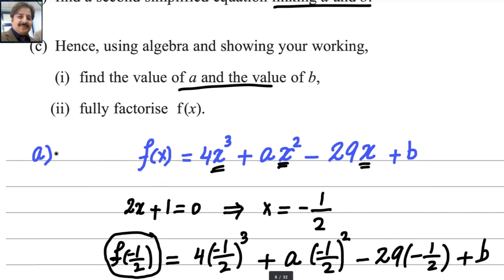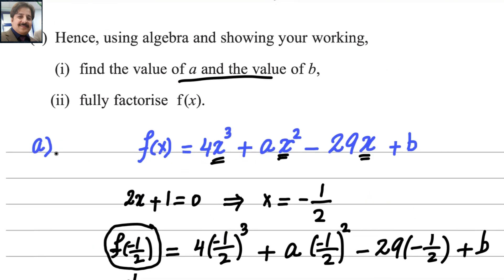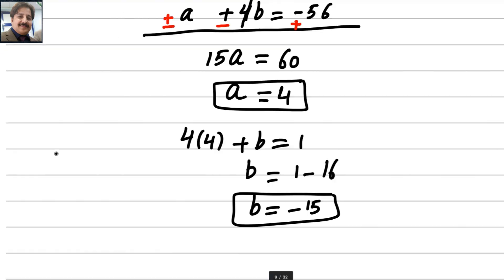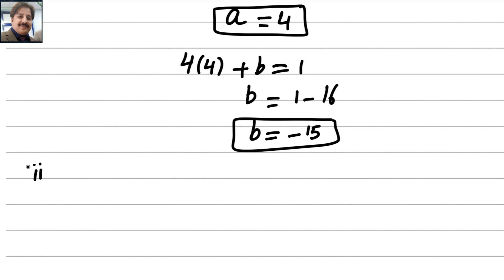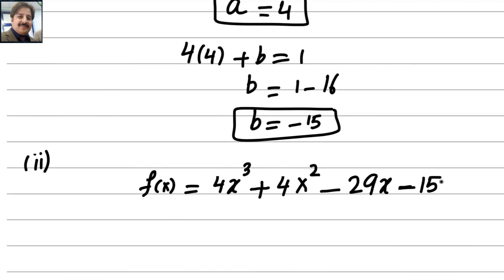For the next part, since 2x plus 1 is a factor of the polynomial, we can fully factorize f of x. Replacing a with 4 and b with negative 15, f of x becomes 4x cubed plus 4x squared minus 29x minus 15. We can divide this polynomial by 2x plus 1 using long division, since it is exactly divisible.